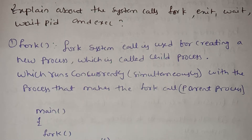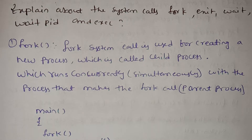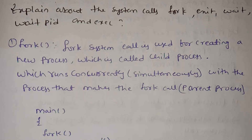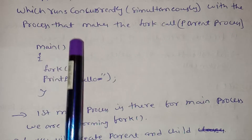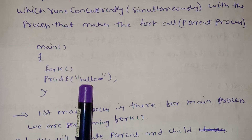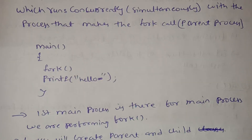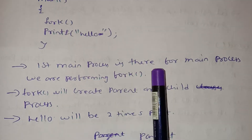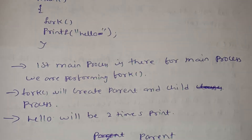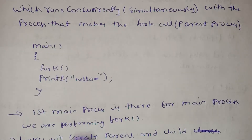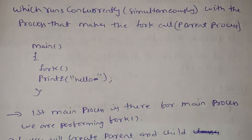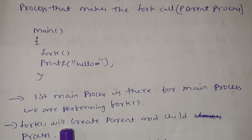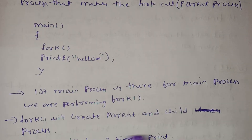The child process runs concurrently. In the main method, we call the fork system call and then print hello. The main process performs the fork system call, and from this a child process is created. So hello is printed two times — once by the parent and once by the child.